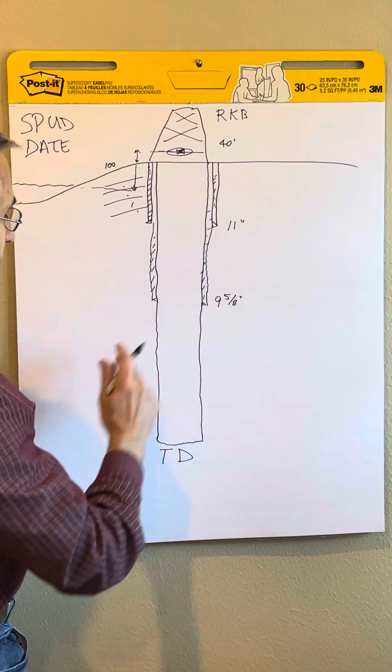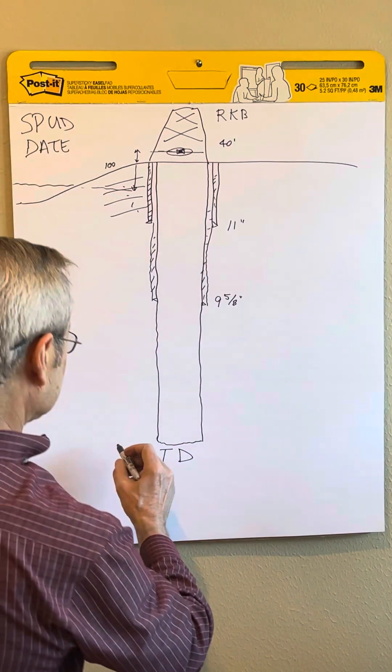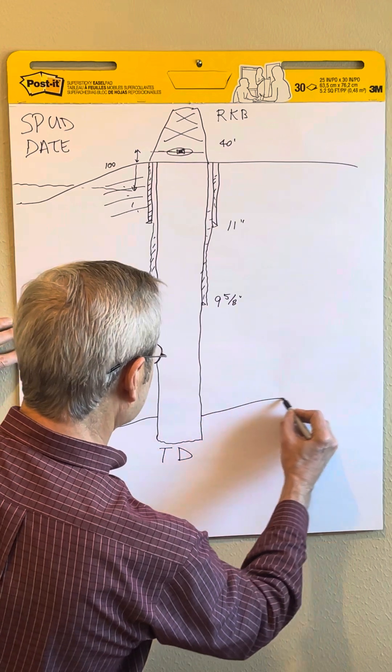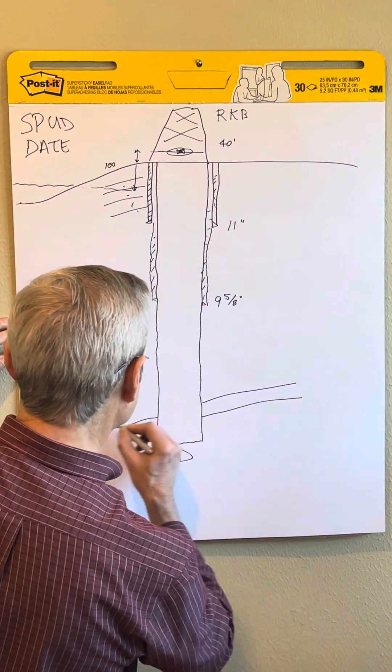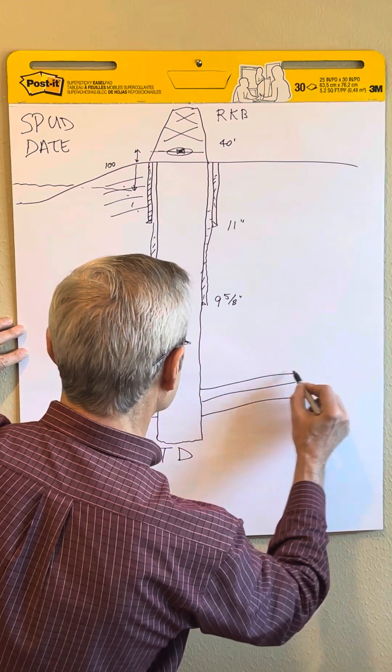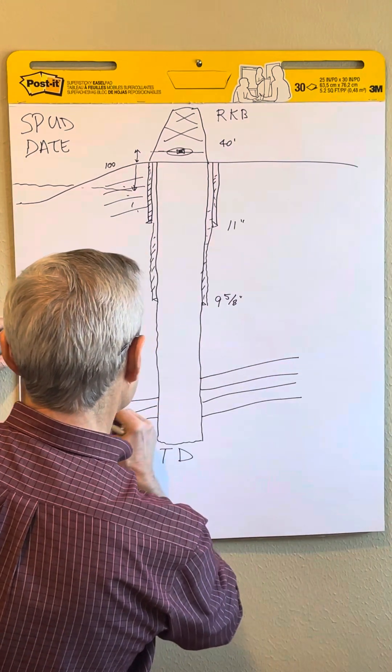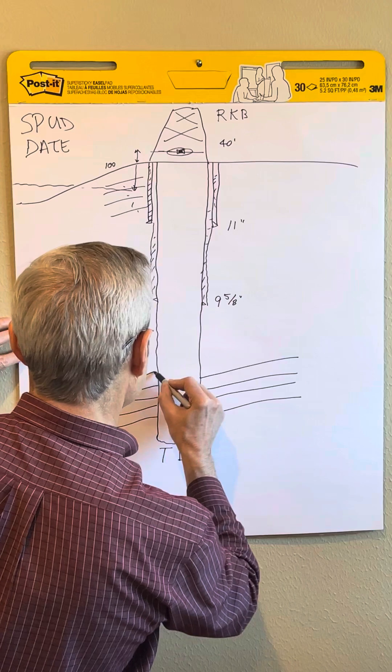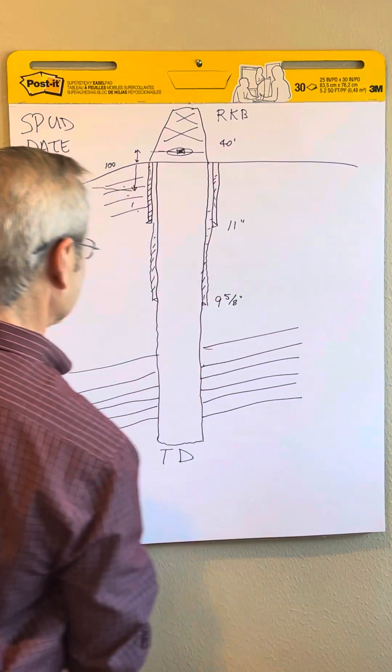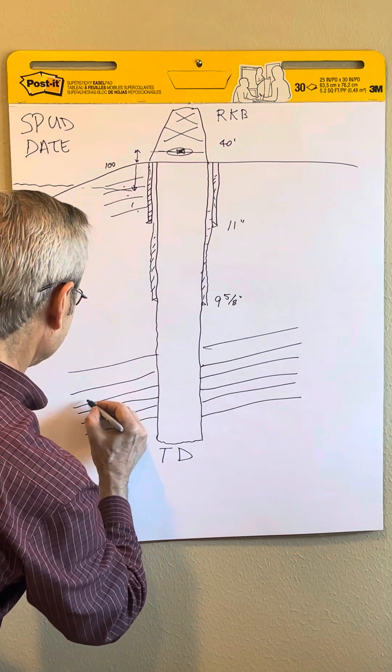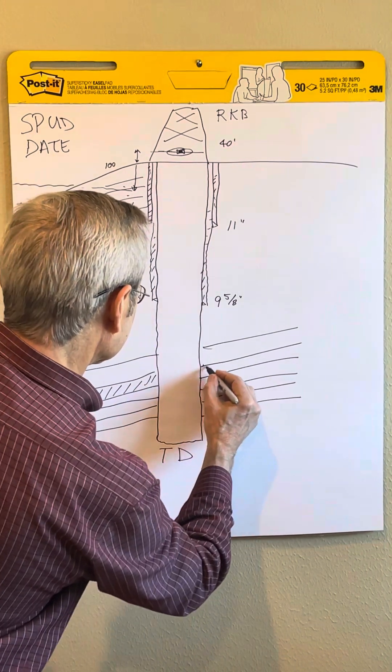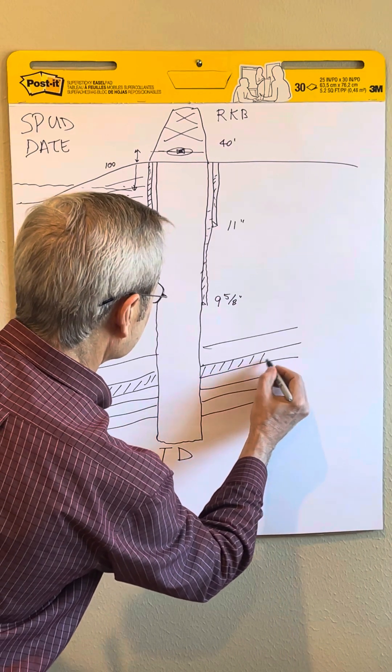Once you log it, you're going to see the formation. Usually the formations are laid down horizontally, maybe with a little dip to them. It's just layers and layers of rock that you drill through. This might be a non-permeable rock, so it's not going to have any oil or gas or water in it.